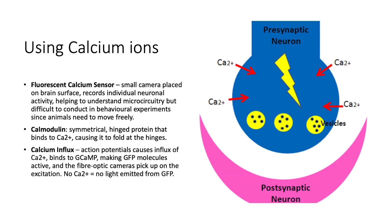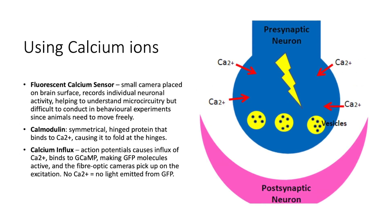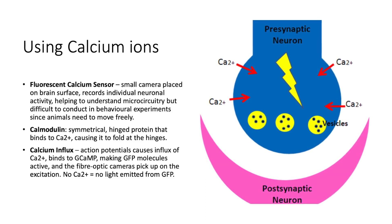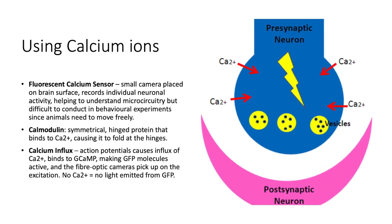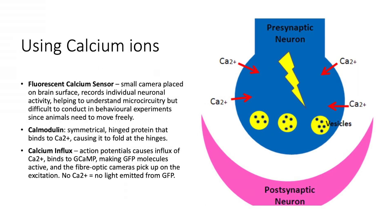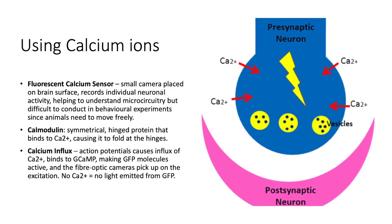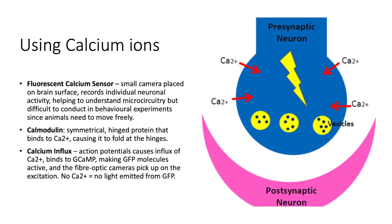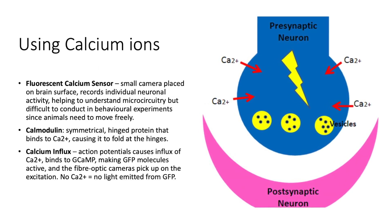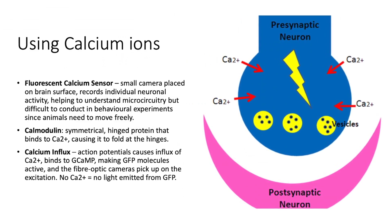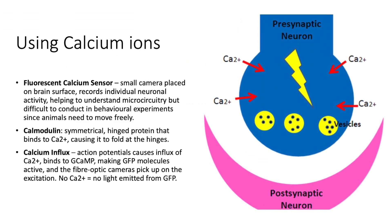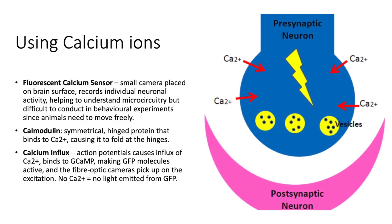Fluorescent calcium sensors are small cameras placed on the brain surface which record individual neuronal activity. It helps to understand microcircuitry but is difficult to conduct in behavioral experiments since animals need to move freely. Calmodulin is a symmetrically shaped hinge protein that binds to calcium ions, and this causes it to fold at the hinges.